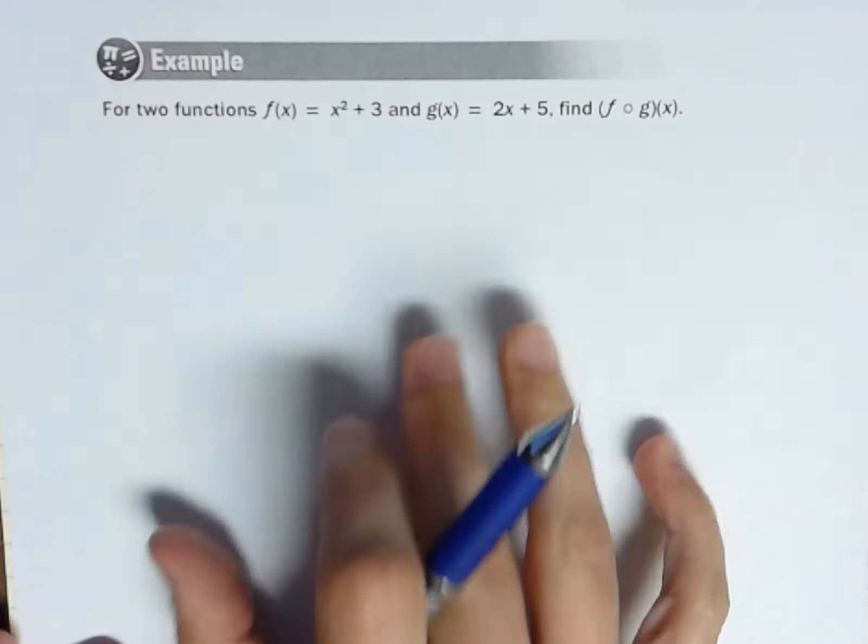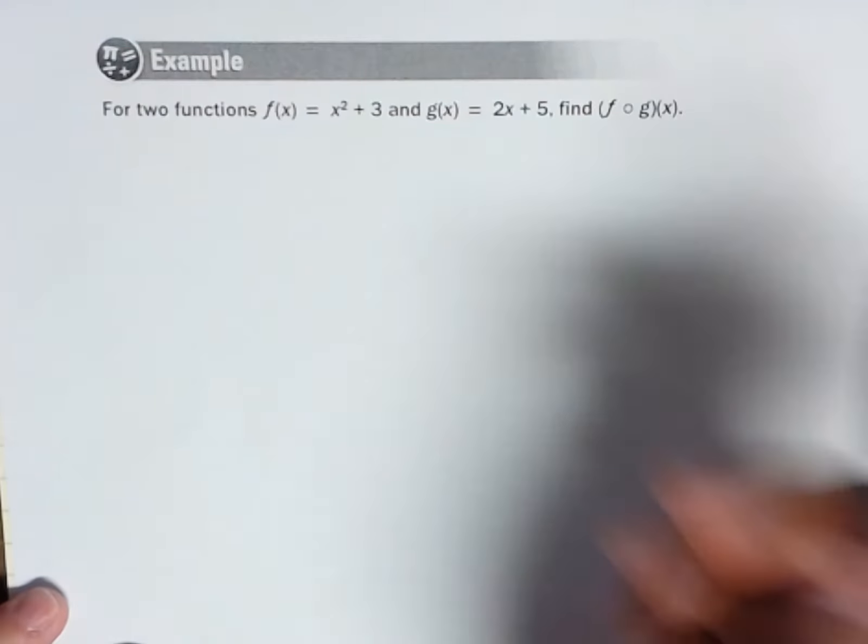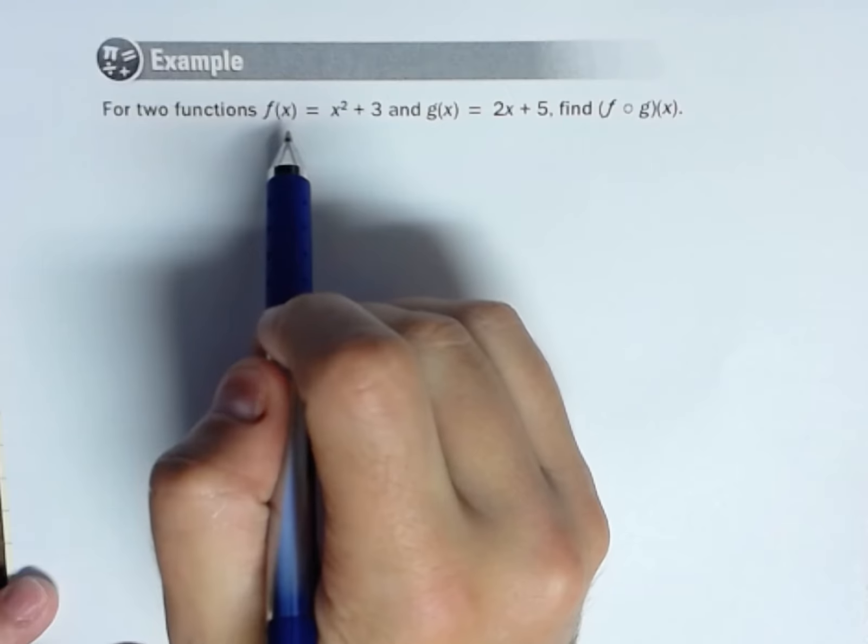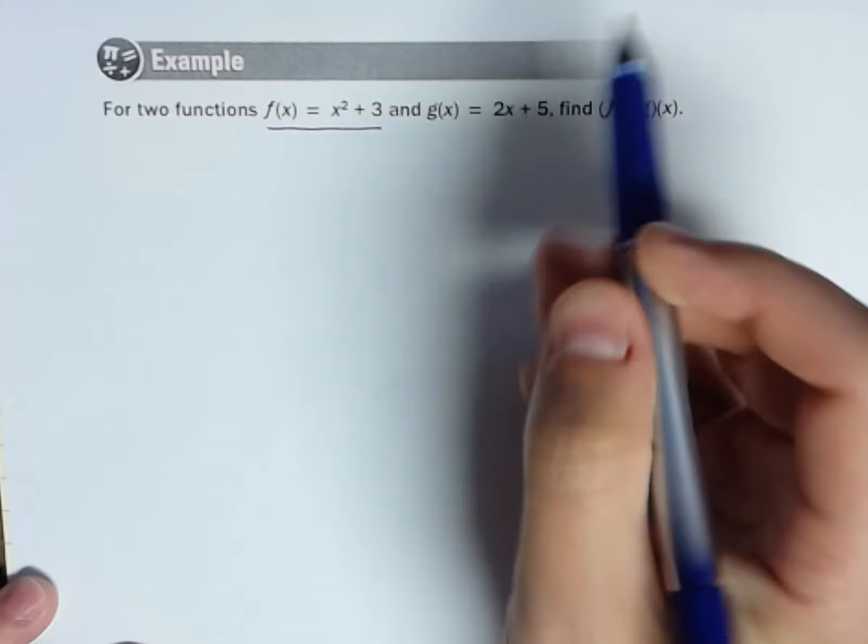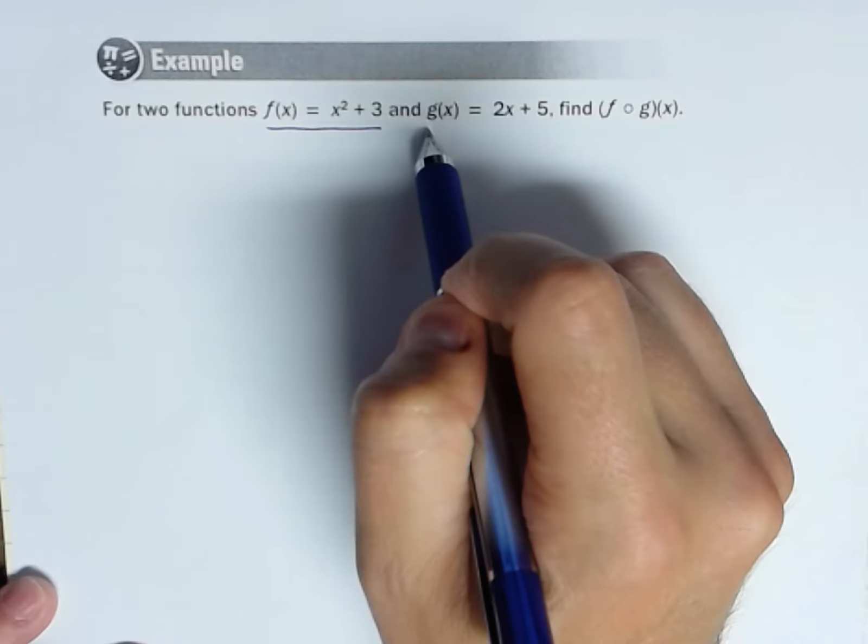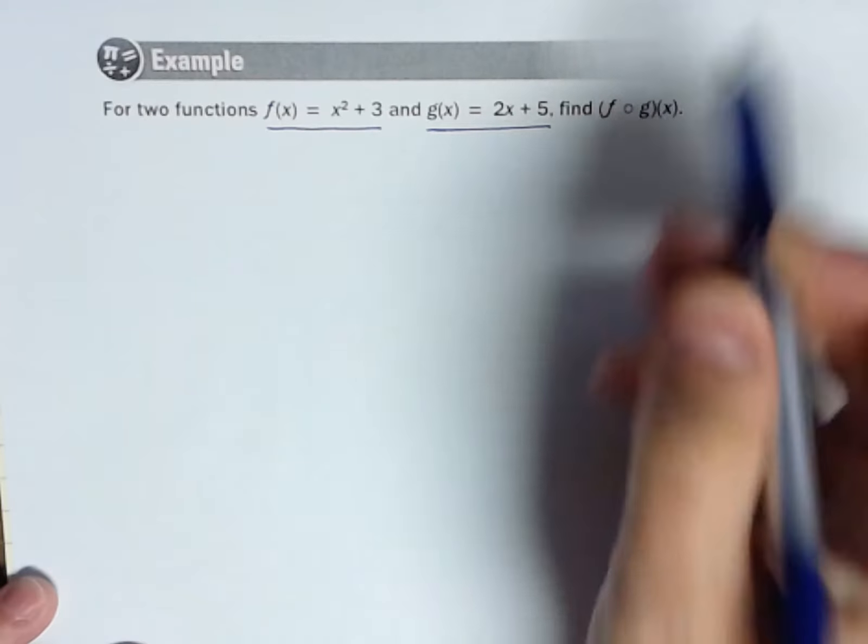All right, here's a little compositions of functions example. So we're given two functions: f of x equals x squared plus 3. Here's our second function, g of x equals 2x plus 5.